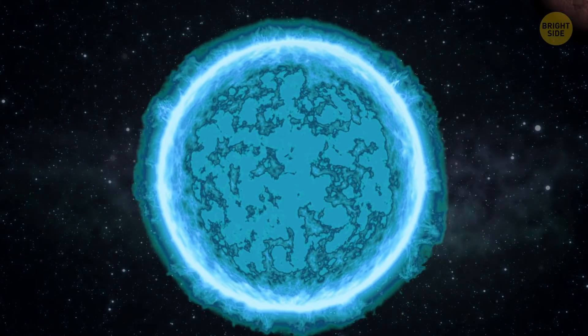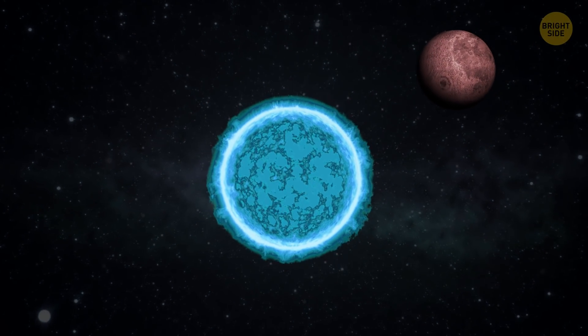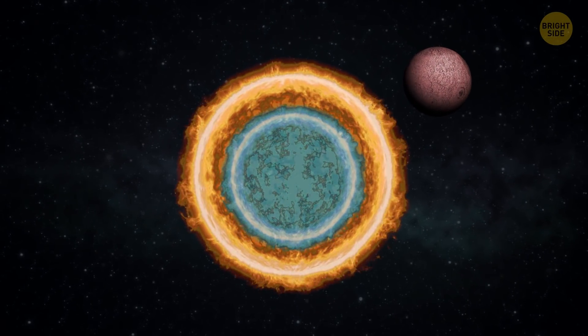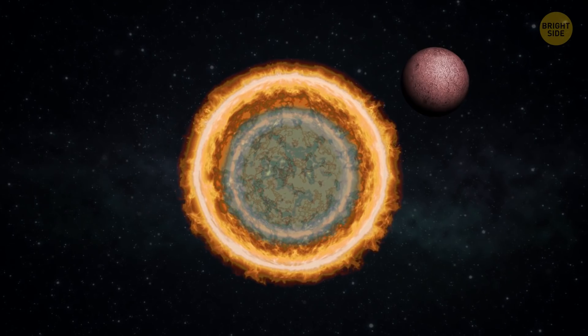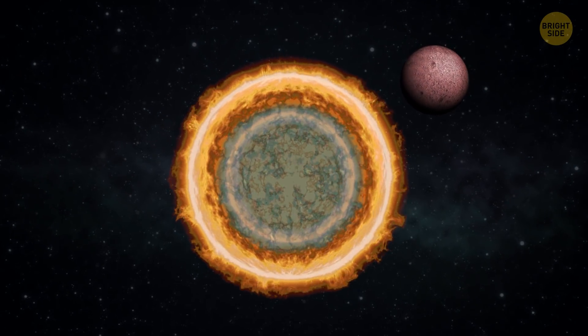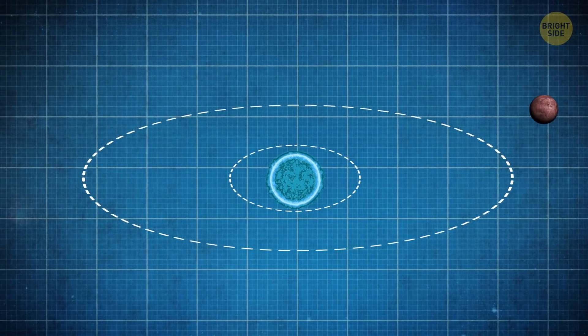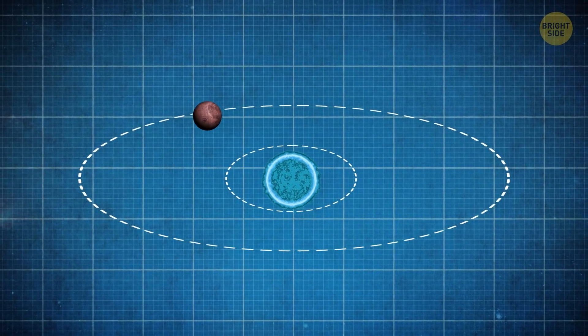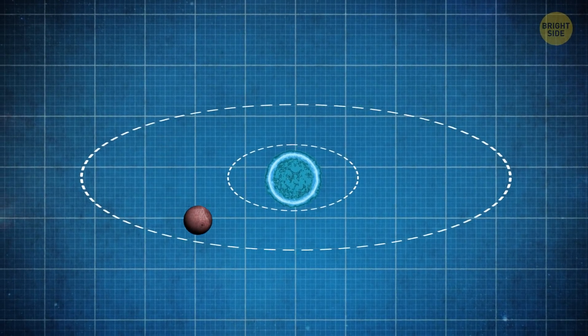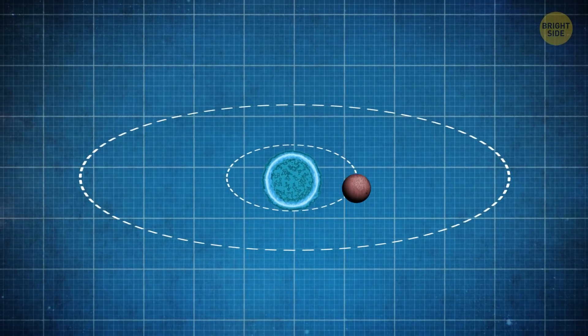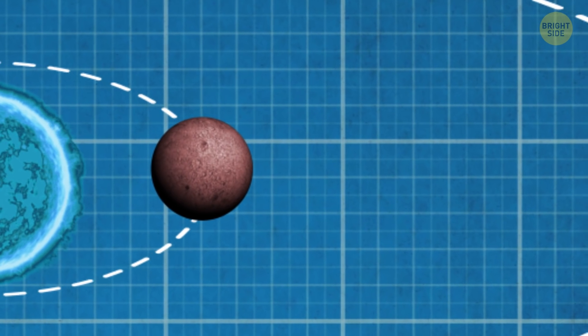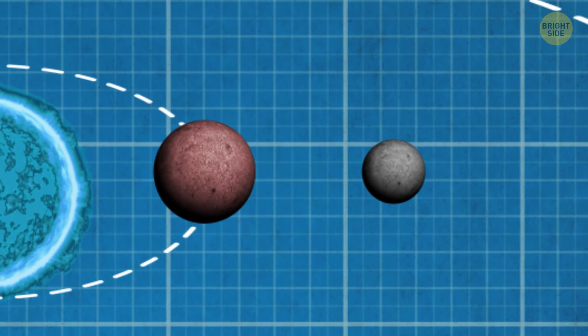Astronomers know of at least two that have planets orbiting around them. The origin of these satellites isn't clear. They might have been with the stars from the very beginning and survived their transformation into neutron stars. Or they could have been captured by the enormous gravitational pull of these super-dense space objects. Draugr, a planet orbiting one of the neutron stars, is the tiniest exoplanet astronomers have located so far. Its mass is only two times bigger than our own moon.